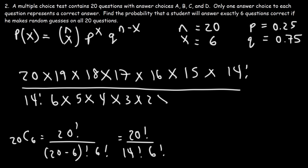If there were five answer choices, p and q would be different. p would be 0.20 and q would be 0.80 — one out of five for p.